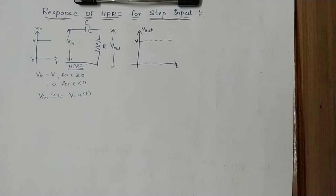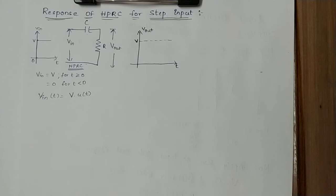We already know the transfer function of the HP RC circuit from the previous session. The transfer function H of S equals S tau divided by 1 plus S tau. We will now see how it is implemented here.